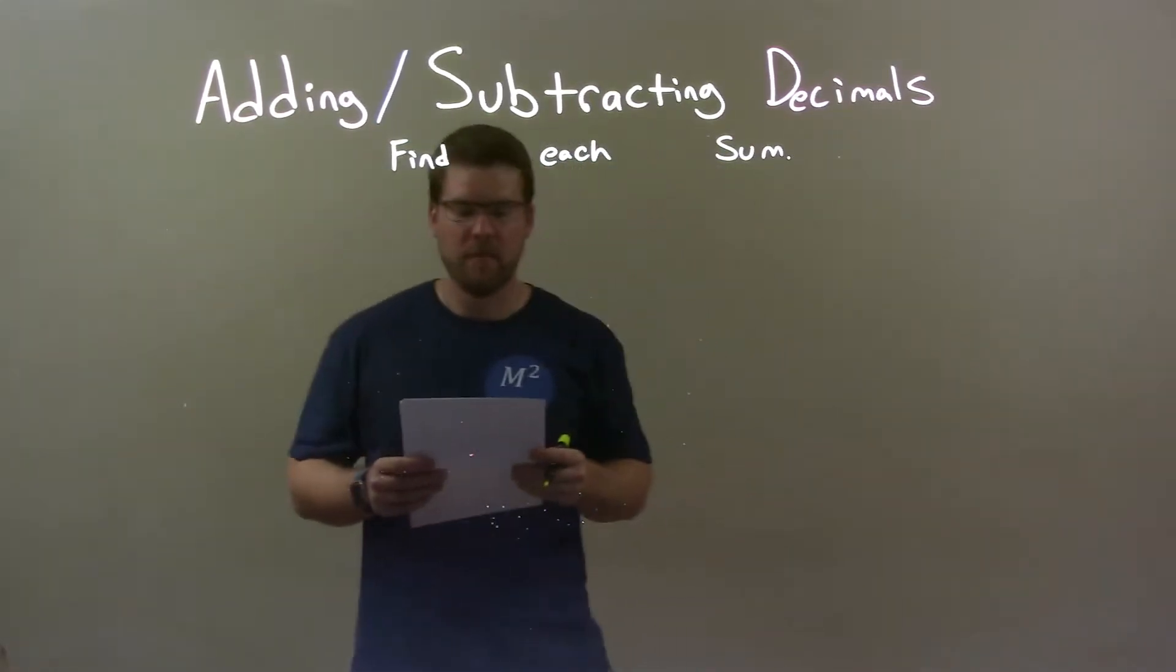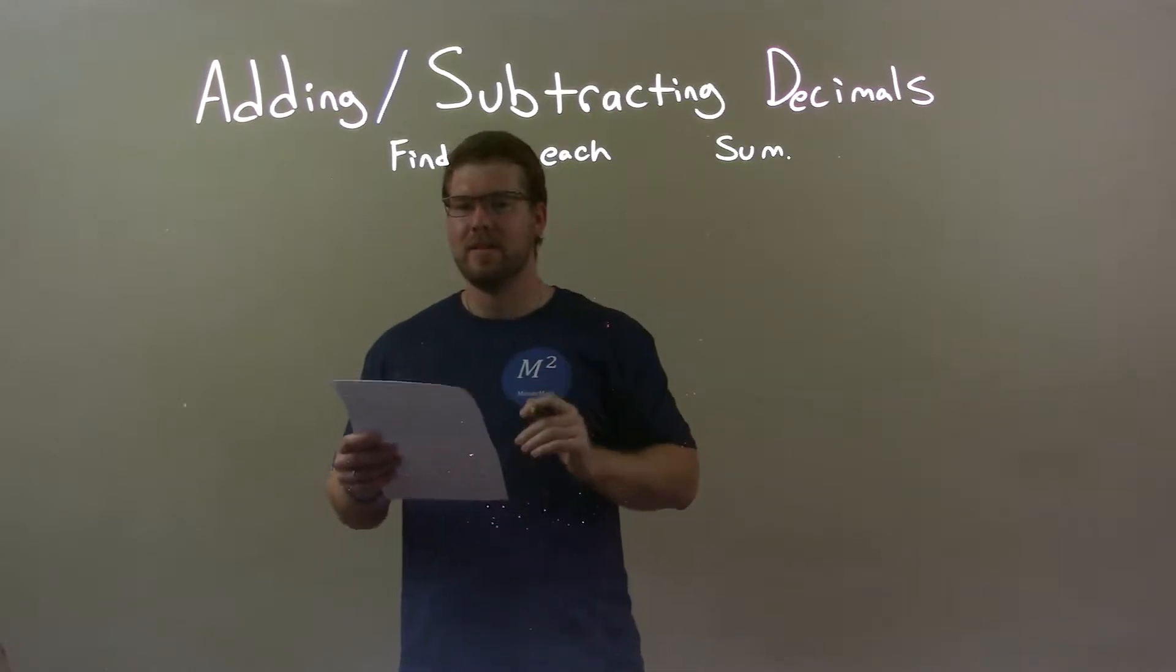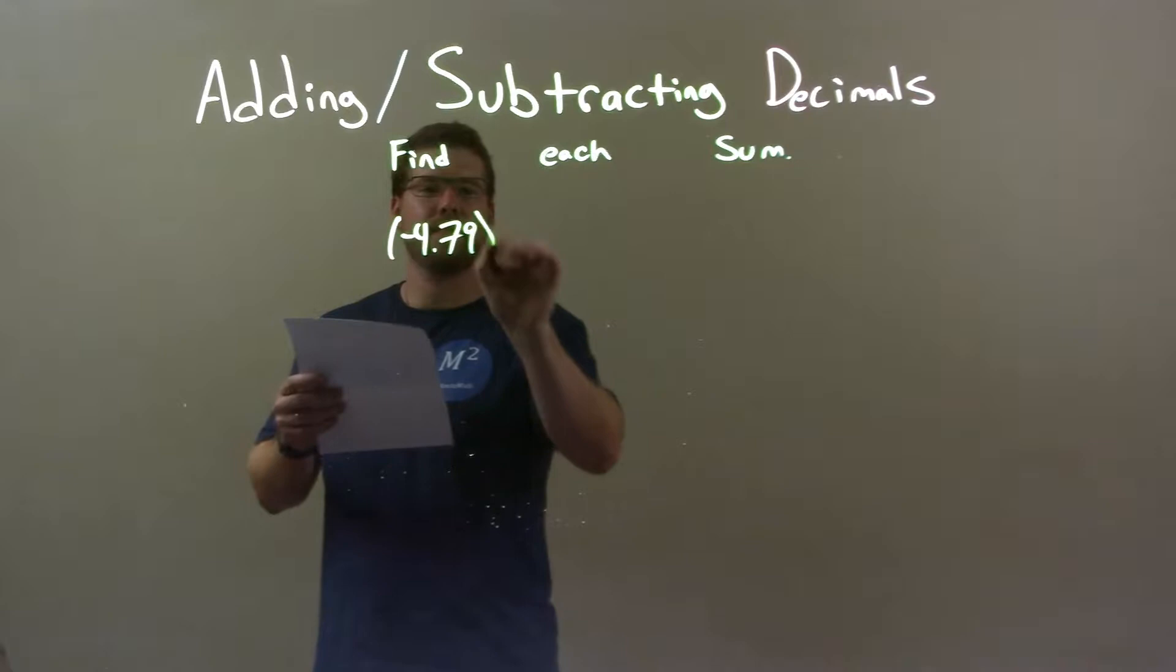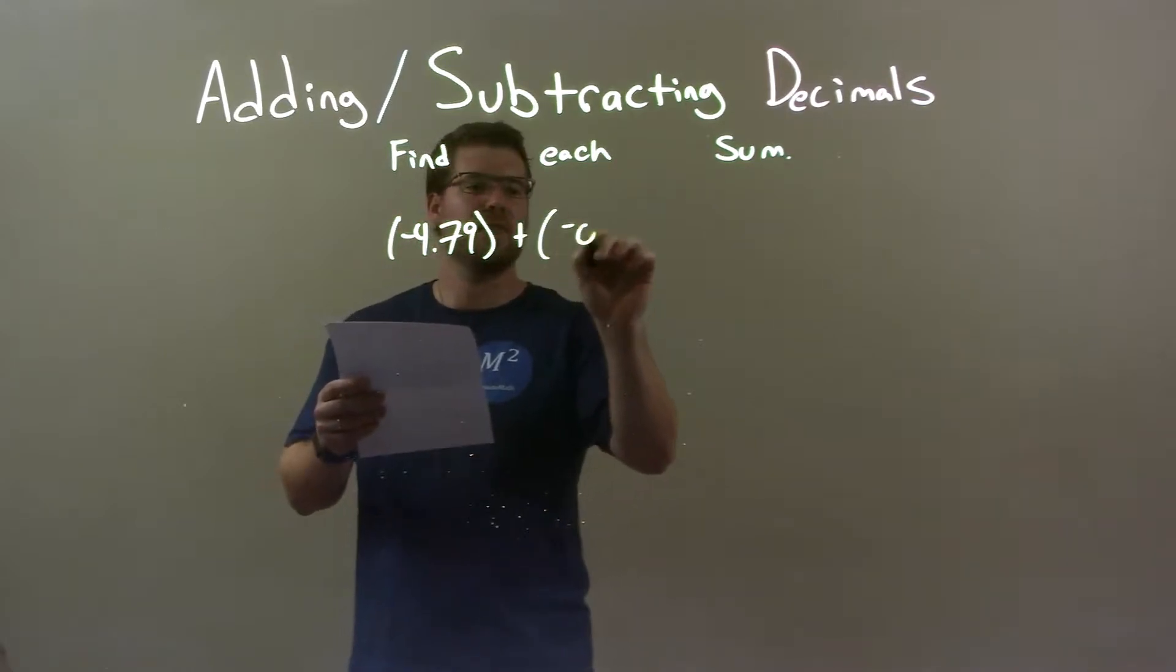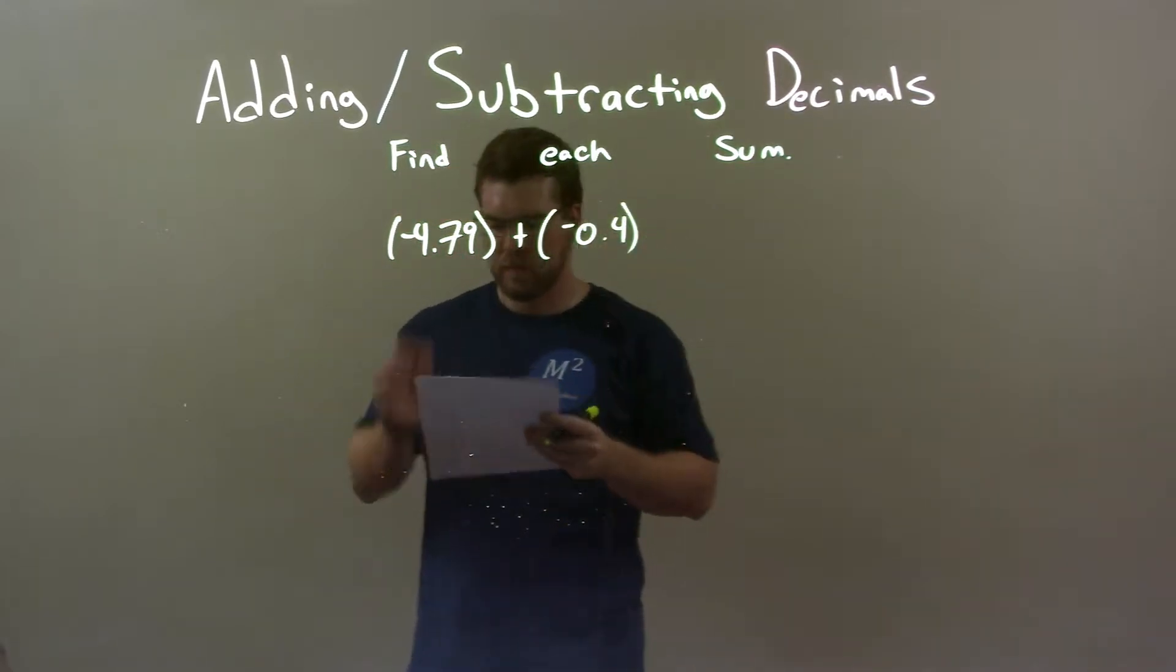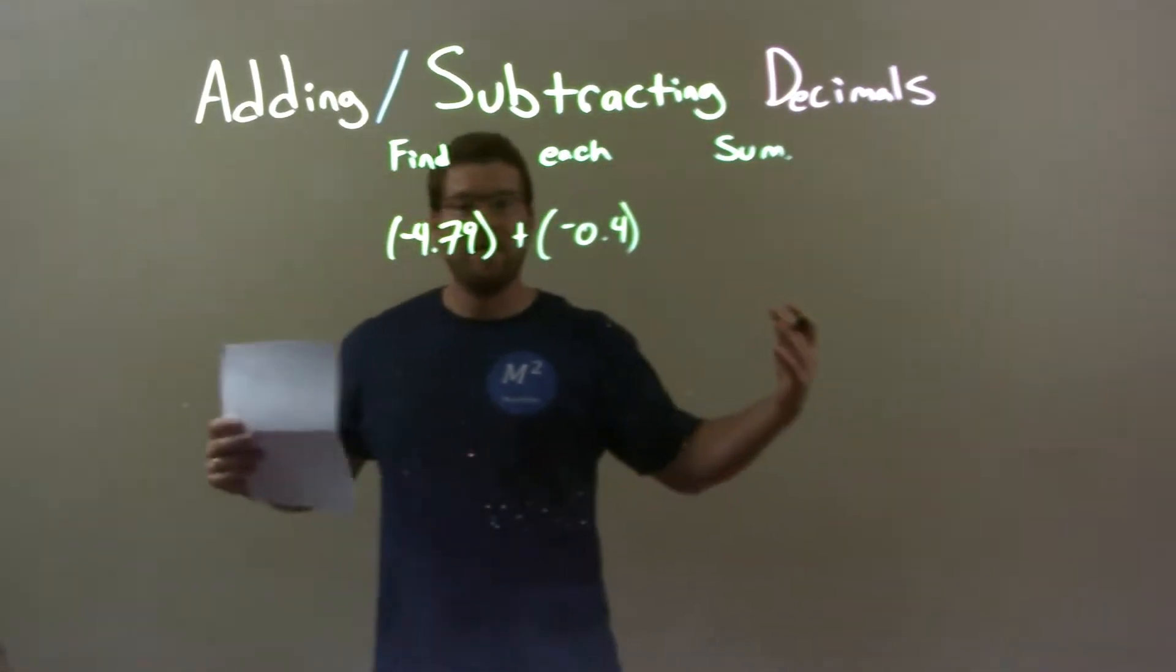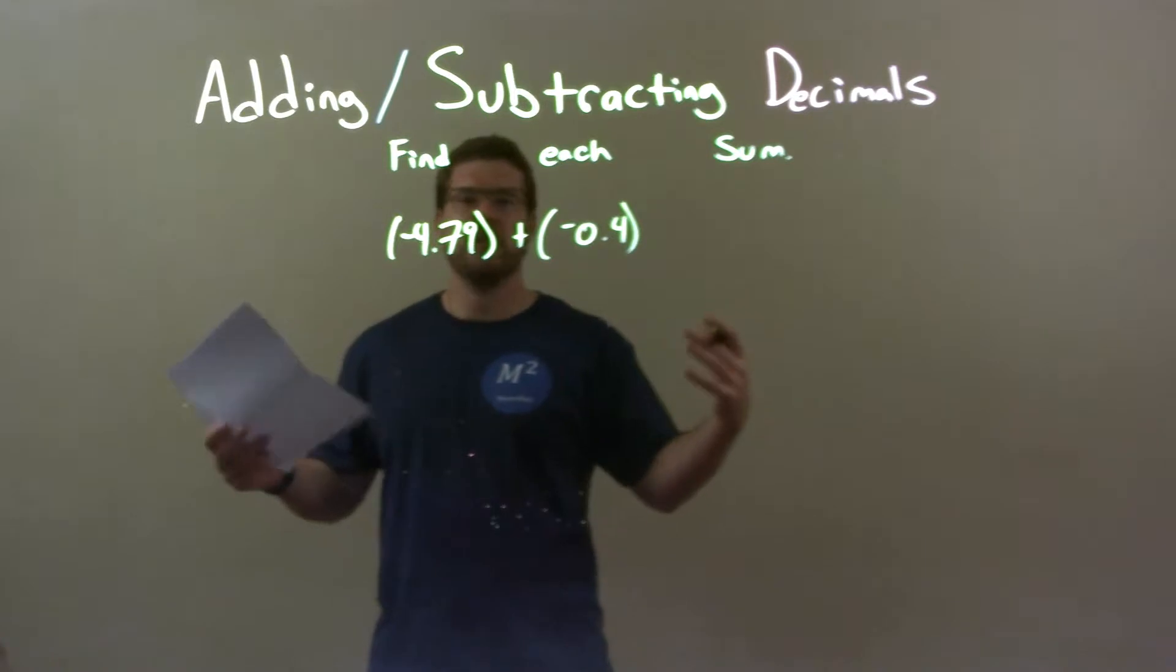We're going to find each sum. So, if I was given these decimals, negative 4.79 plus negative 0.4, okay? Well, I'm looking to combine these decimals. Now, they're both negatives. So, I know if I add them together, it's going to be even a larger negative.